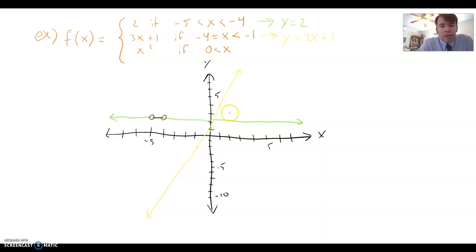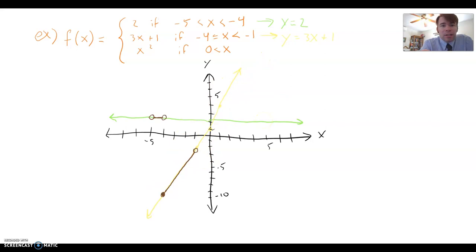But again, we only want the part between negative 4 and negative 1. So we're going to come back through here. And negative 4, this looks like it's right around there. And negative 1, that's going to be right around here. And the negative 4 should be a closed circle because it says or equal to. But this is strictly less than, so that's an open circle there when x is negative 1. And we're just keeping this part. And you can go ahead and erase the rest of the yellow line. Again, I'm going to leave it just so that we can see what we're doing as we move on.